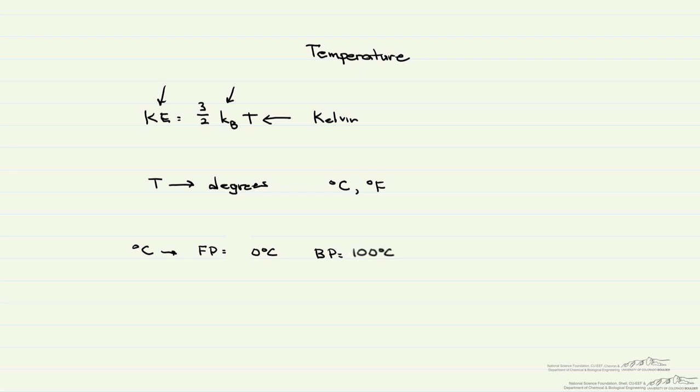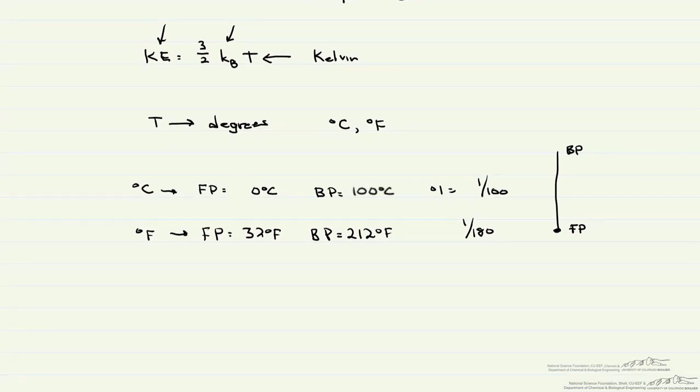This is at one atmosphere pressure and therefore each degree, so one degree, is one one-hundredth of the distance between our freezing point and our boiling point. For Fahrenheit though, our freezing point is equal to 32 degrees Fahrenheit and our boiling point is equal to 212 degrees Fahrenheit. So now we divide this into each degree being one one-eightieth of the column in your thermometer or the distance between those two points.